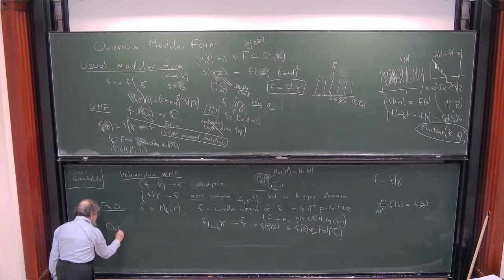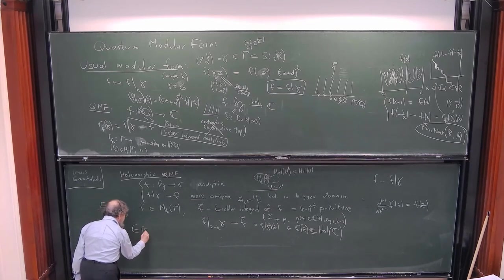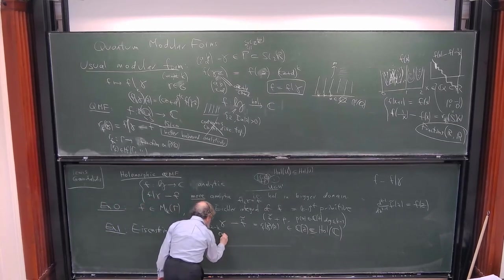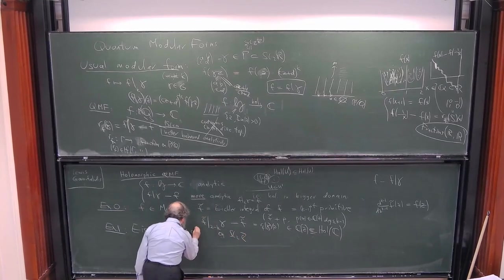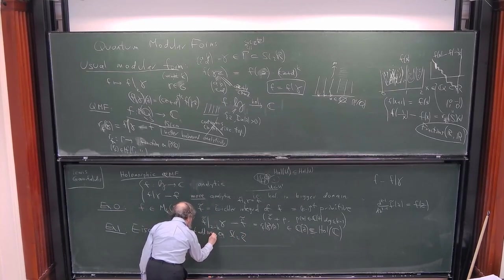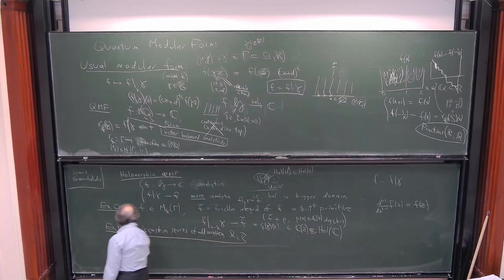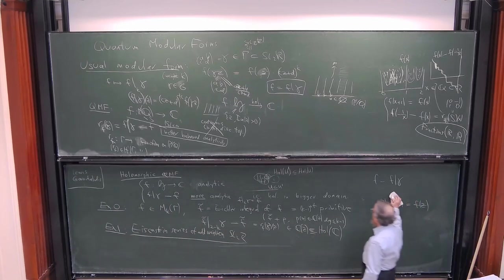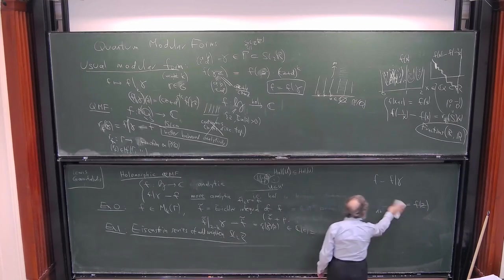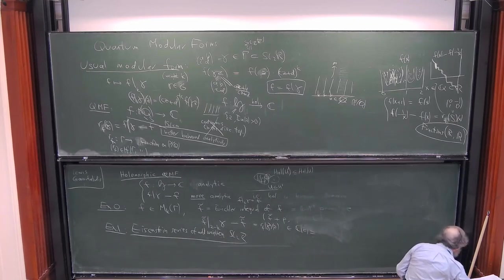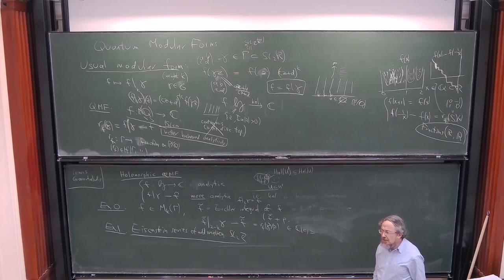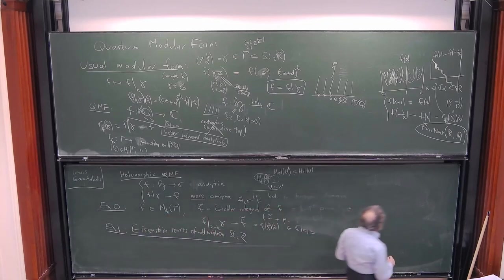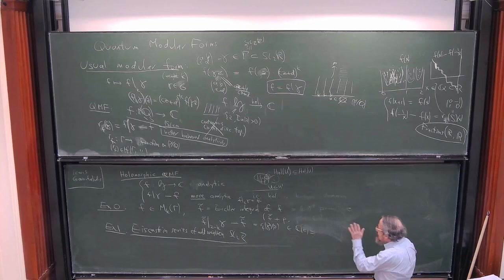So my first interesting example will be the Eisenstein series on SL₂(ℤ), but of odd weight. Before I write that, let me make a formal definition here. Why do you use the word 'quantum'? I don't want to go into that now — it's a long story. It comes from quantum invariants of knots. The idea is roughly that the quantum topologists and physicists who were doing these invariants always wrote q = e^(2πiz), which they write as e^h where h → 0. And then they expand perturbatively. I realized at some point that you could also go to all rational numbers, and therefore in q, to all roots of unity.